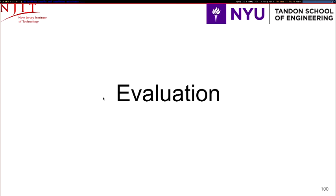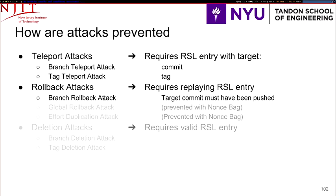With our prototype, we evaluated whether our solution is practical and how much it would cost to provide these security guarantees to Git users. We checked that the solution was correct: if you want to perform any of these attacks, you would need either a key that can authenticate the change in the RSL, or the ability to present older versions of the RSL to a user — and that's why we added the non-SPAC. With the non-SPAC, none of the rollback attacks should happen, and teleport or deletion attacks shouldn't happen with the RSL push entries.